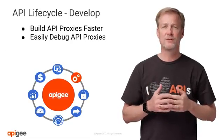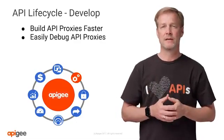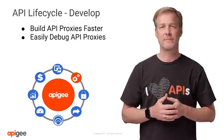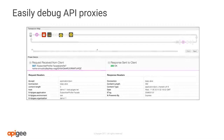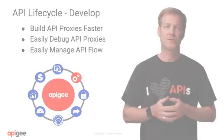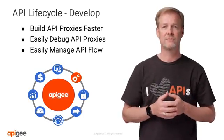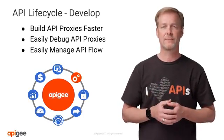Apigee Edge also provides a visual trace tool that is an API debugger. It enables you to quickly inspect the details of an API call through the Apigee Edge runtime engine. With the visual trace tool, you can understand the state of an API call at any point in the API call flow, inspect proxy and target request and response payloads, and optimize the API call flow. You can debug the API without the need to inspect multiple log files or write additional debug logic. The visual trace tool enables engineers to spend less time debugging and more time creating value. Apigee is a powerful tool in helping engineers develop their API proxies, which is a critical step in the API lifecycle.